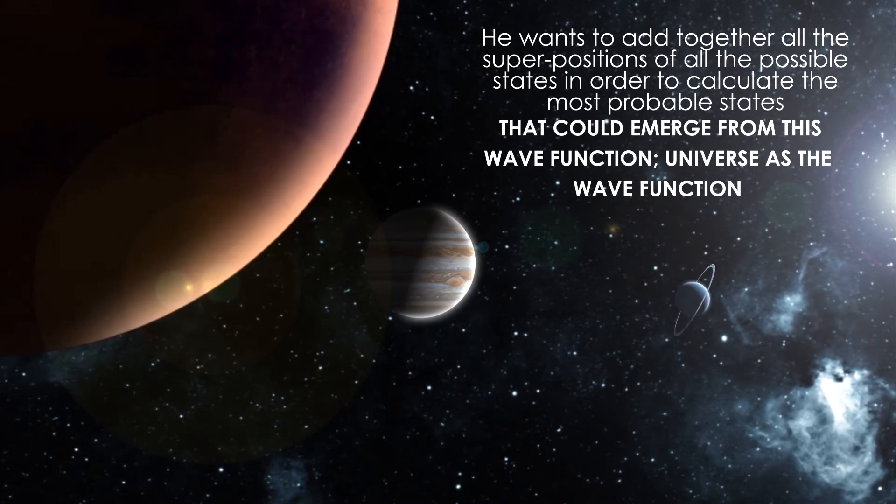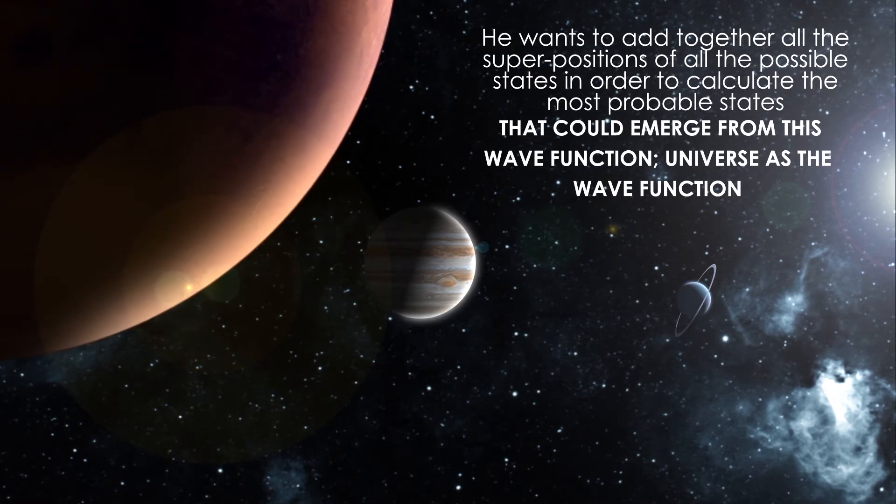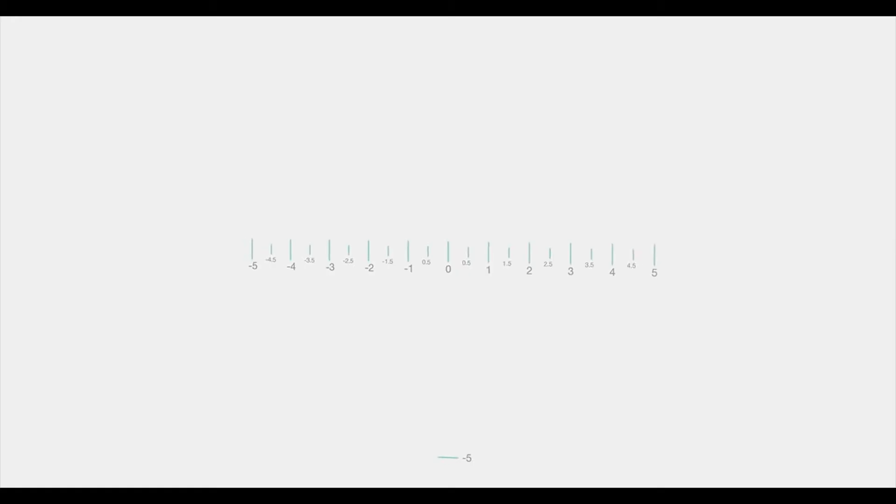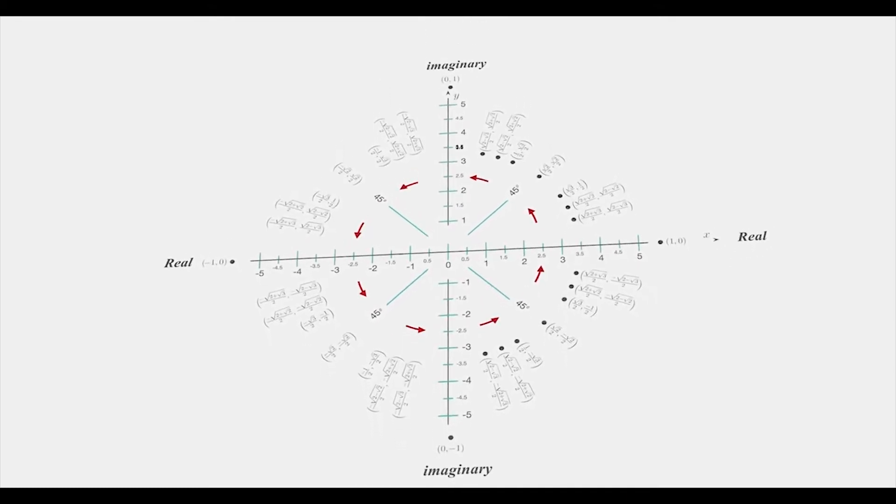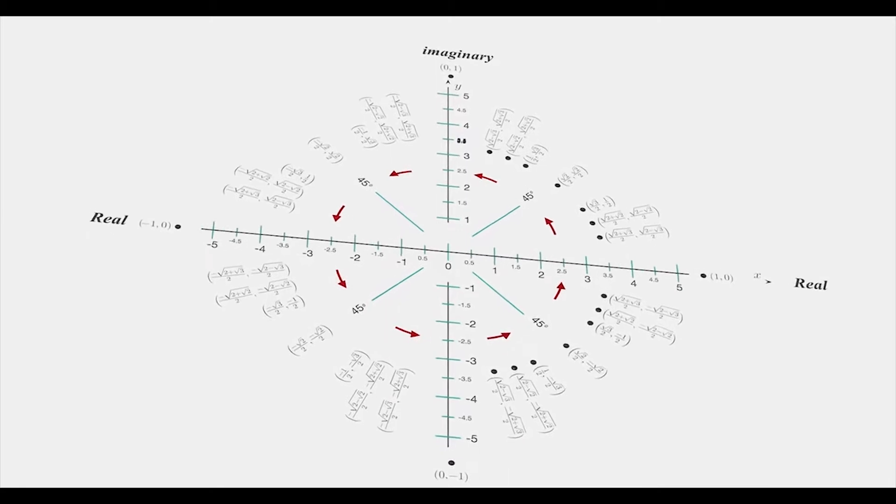Now when he does that, he finds that he cannot solve the mathematical problems that he is faced with in trying to perform this operation without what are called complex variables, mathematics of imaginary time. So every time there is a time variable, he has to replace it with the device of imaginary time.